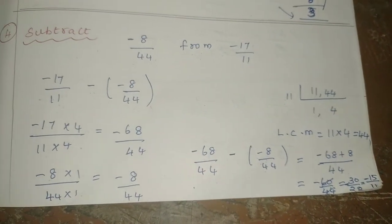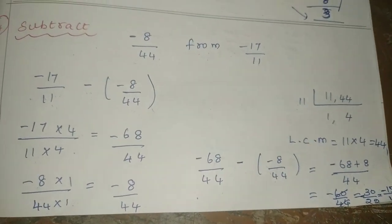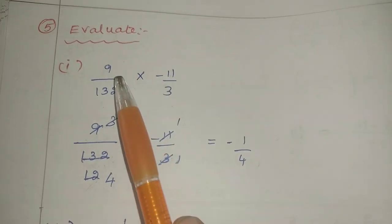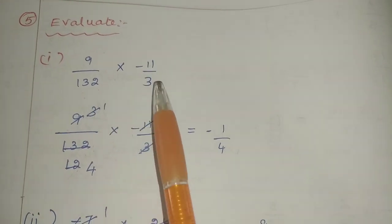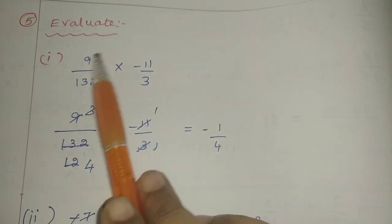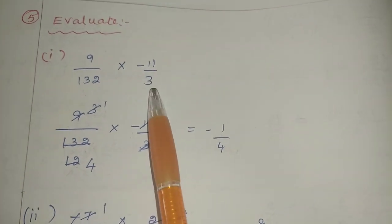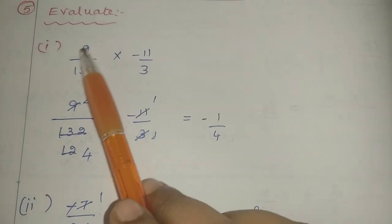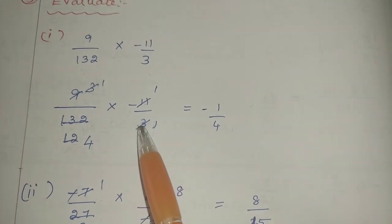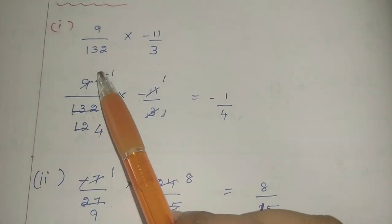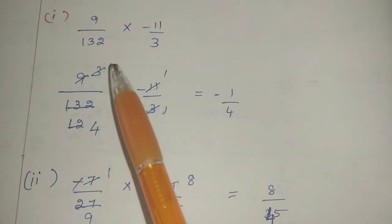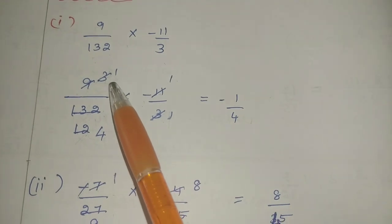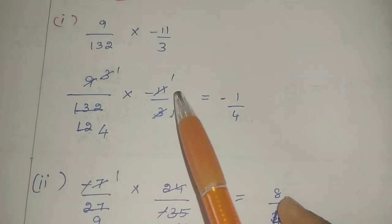Next, now we have the 5th sum. The 5th sum: evaluate 9 by 132 into minus 11 by 3. This is a multiplication with minus. So now we have to solve. 1 three is 3, 3 threes are 9. Now look at the 3 times table — we need to solve using 3 tables here. So we need to solve it here.